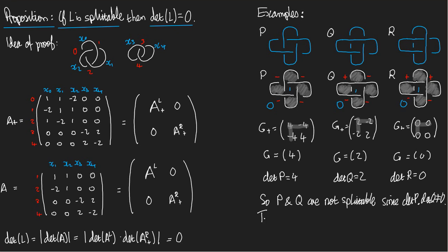So the proposition tells us nothing about R. But the link R is obviously splittable anyway. Can you see it? I just take this inner loop and move it to the left until they're completely separated. That was the end of our example.